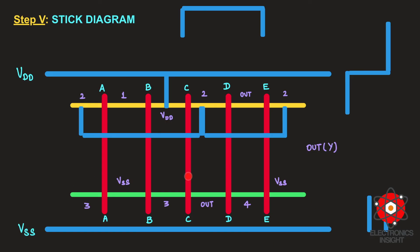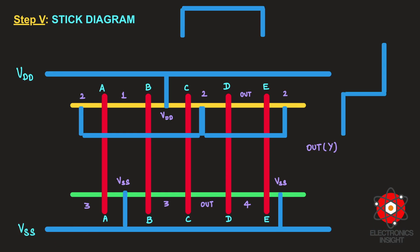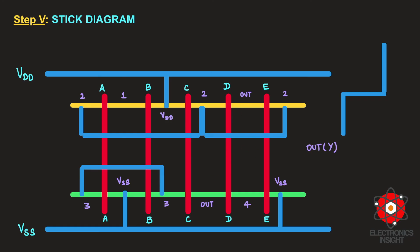For the pull-down network, we finish the VSS ground connections by joining both VSS labels to the VSS layer. Then node 3 and node 3 are connected in parallel. Node 4, similar to node 1, has no matching node to join, so we leave it. Finally, the OUT from the pull-up network and the OUT from the pull-down network are joined and given a straight connection to the output terminal.